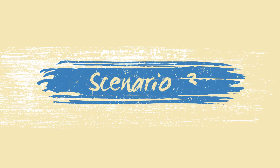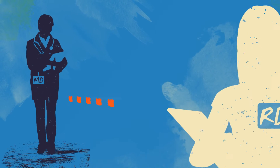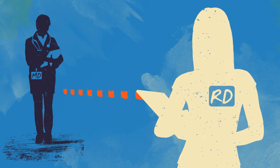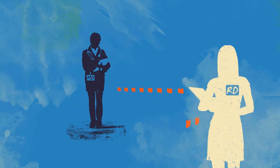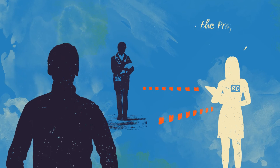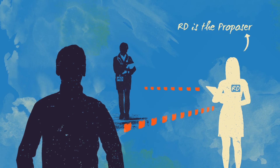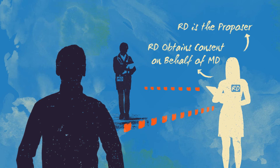Scenario 3. A client on the cardiology unit of your hospital requires nutrition intervention. While you don't have diet ordering authority, you propose the nutrition care plan to the client and obtain informed consent.